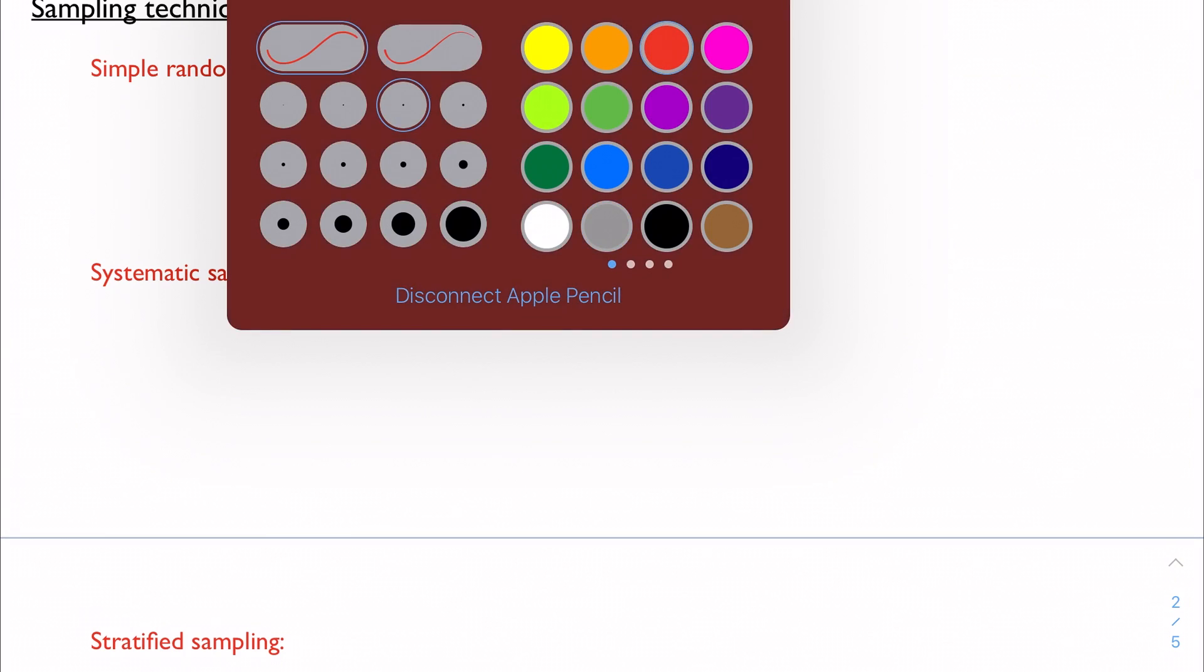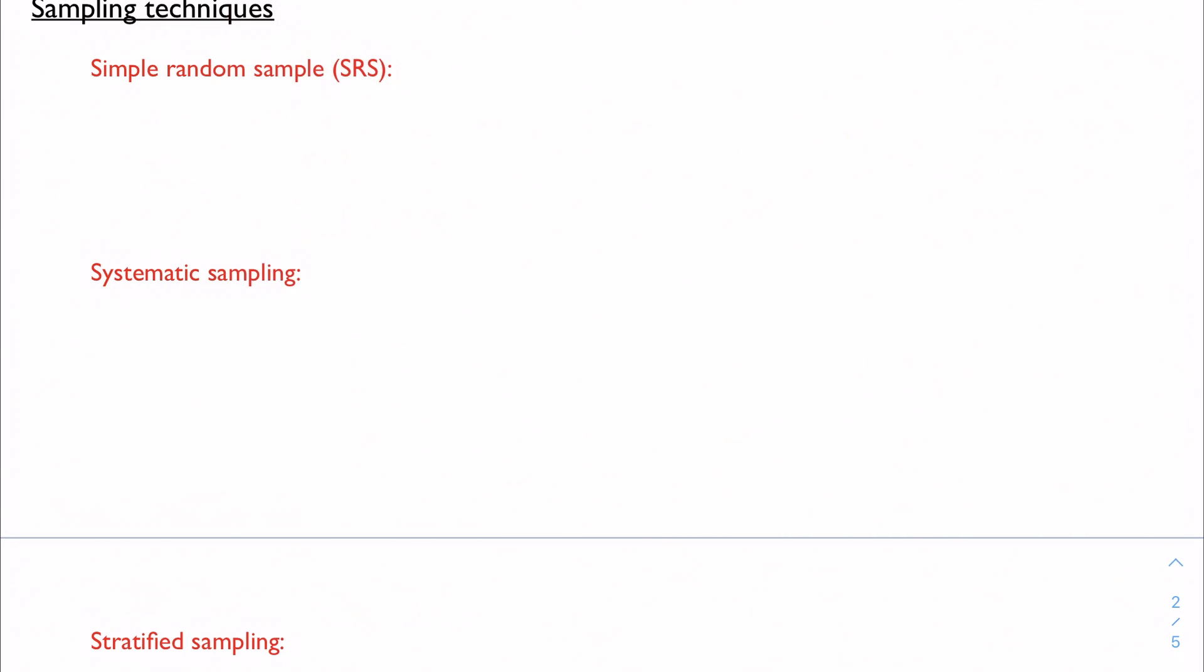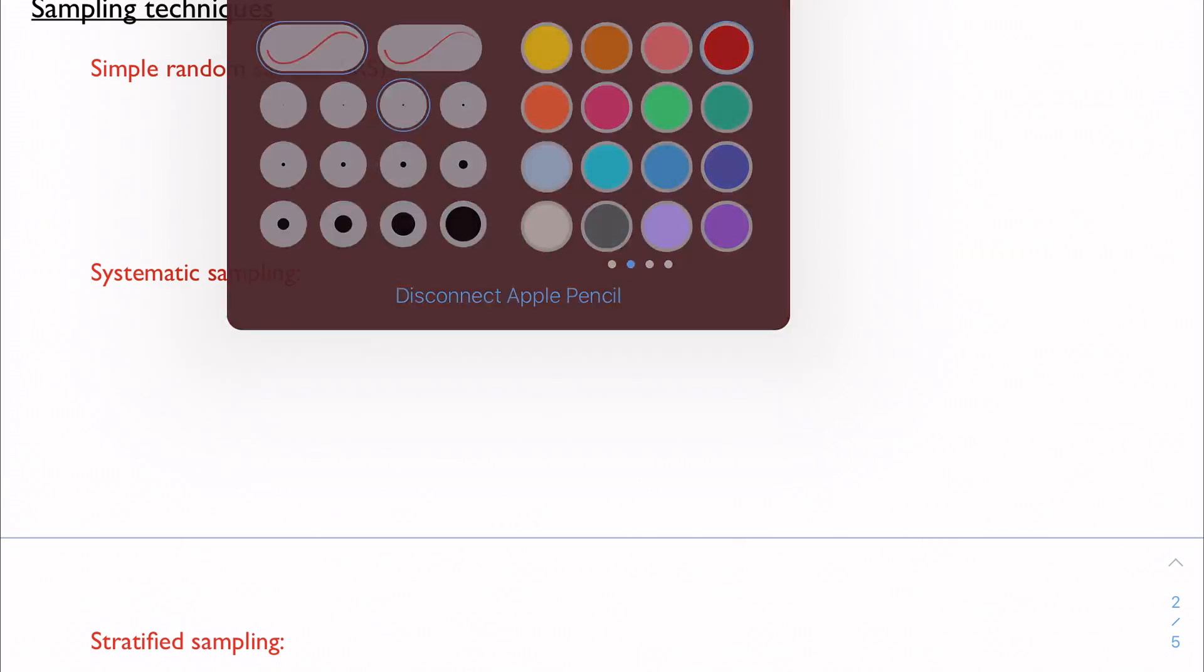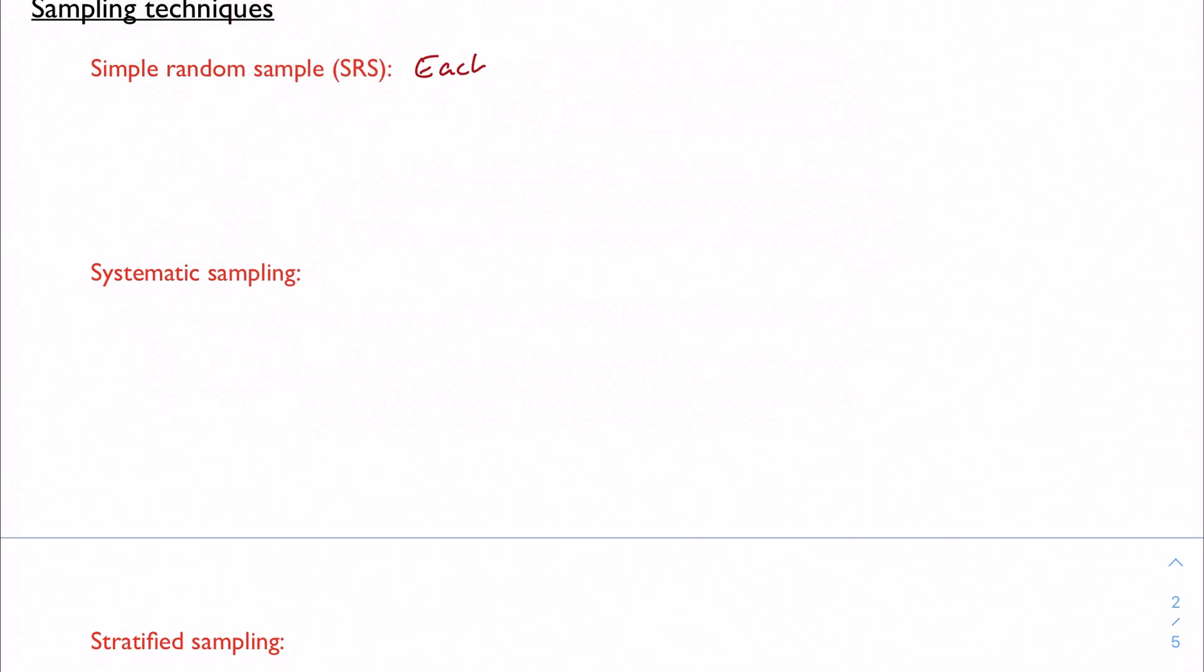And the first one is a simple random sample, and although a lot of these could actually use the acronym SRS, this is the one that the book actually gives the acronym to. So in a simple random sample, all it's saying is to say that each member of the population has an equal chance of getting selected.